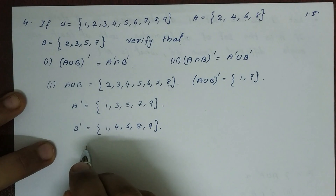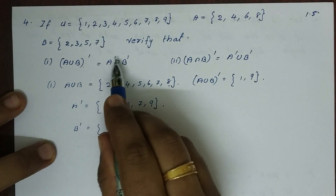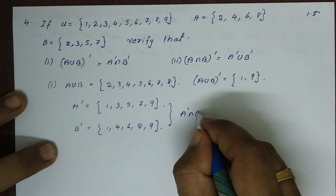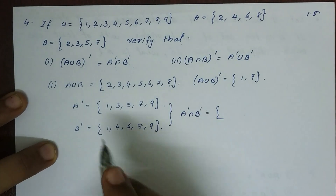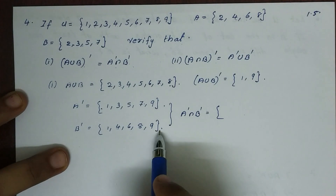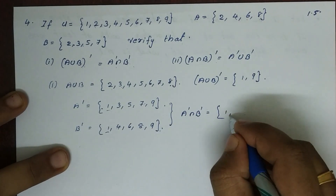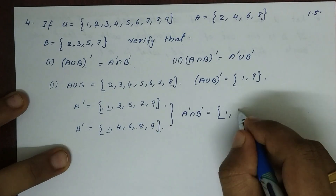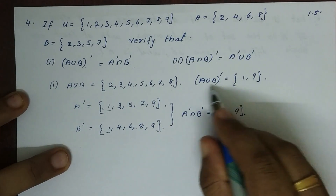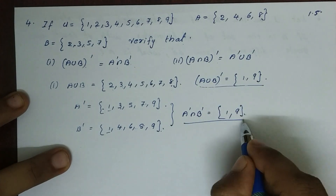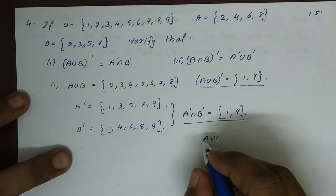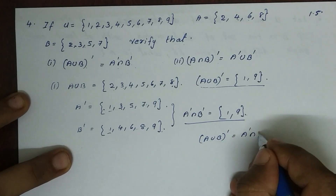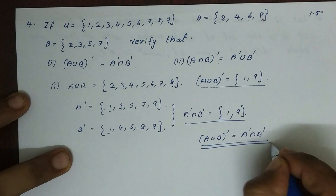Then A complement intersection B complement: these two sets have common elements 1, 3, 5, 7, 9. So A union B complement is equal to A complement intersection B complement. Both give {1, 9} — verified.